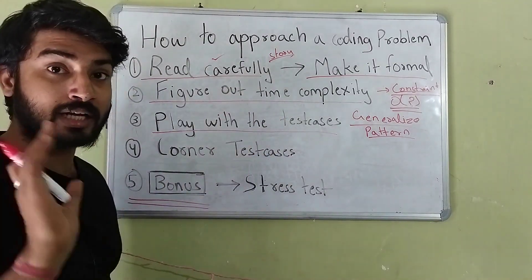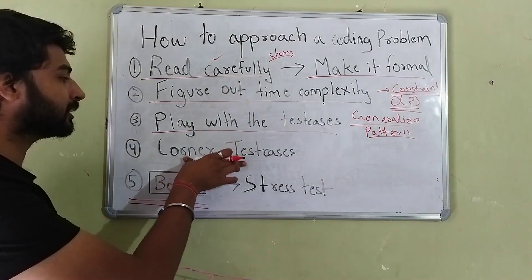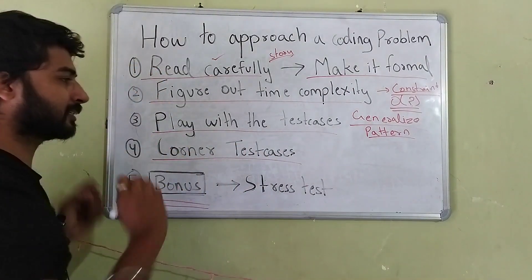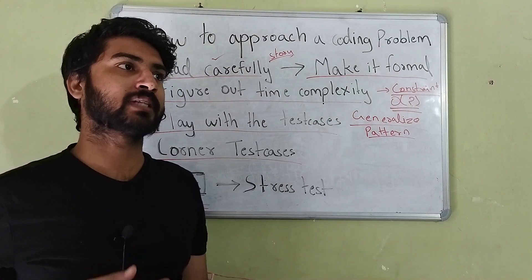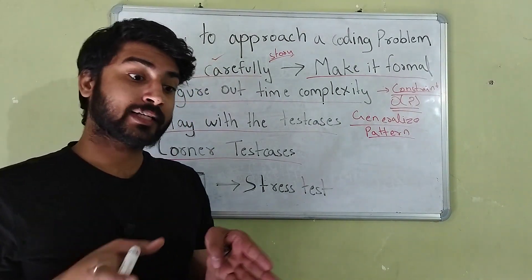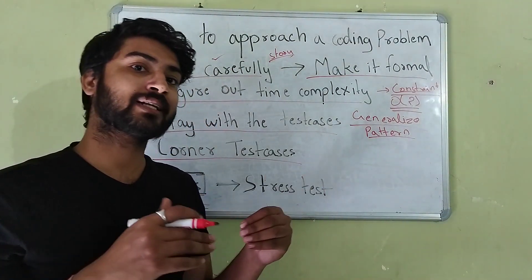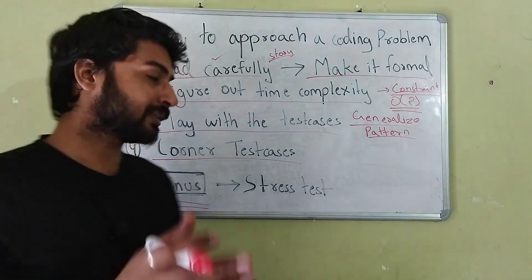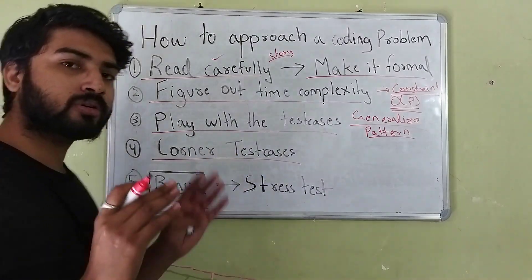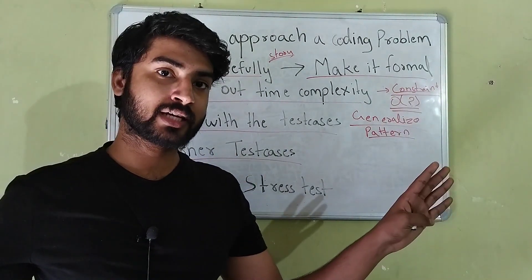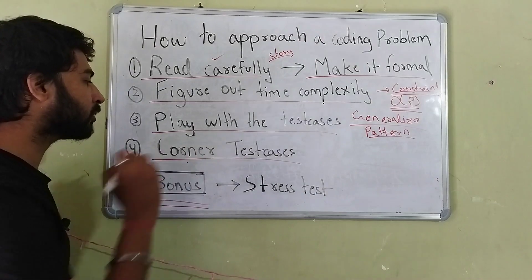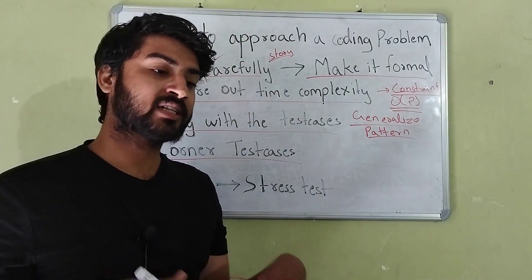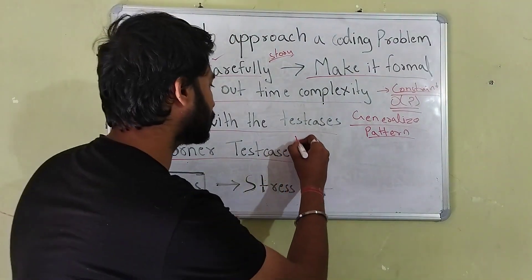The example test cases alone are not enough — a lot of the time corner test cases are not given in the examples. So the next step is figuring out the corner test cases. What happens is that you figure out an approach and it works perfectly on the example test cases, but brings a wrong answer on the actual hidden test cases because you're not considering corner cases. So think of as many test cases as you can, especially corner cases, to avoid wrong answers when submitting.